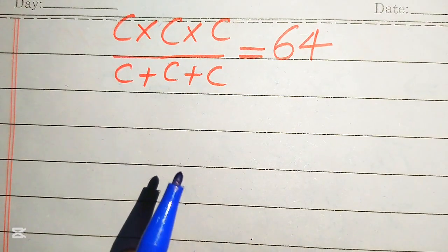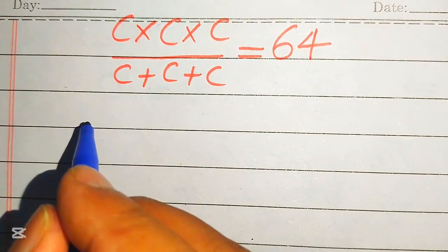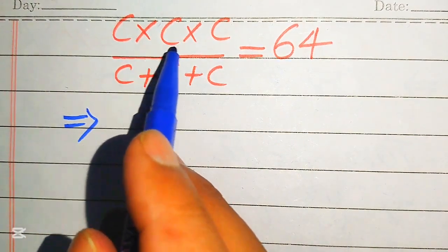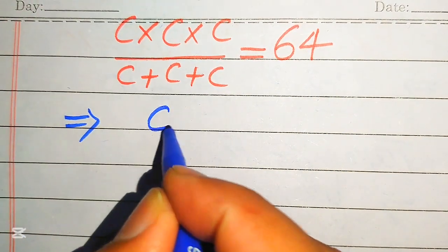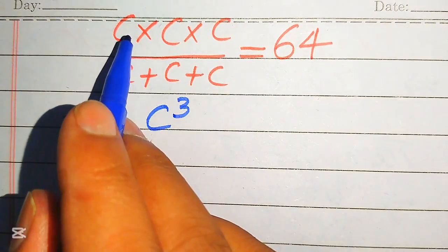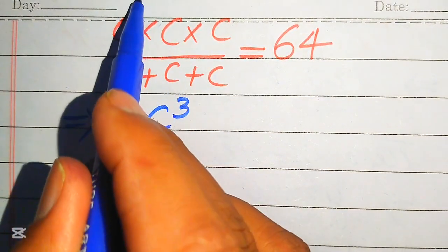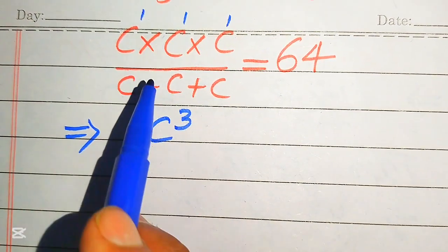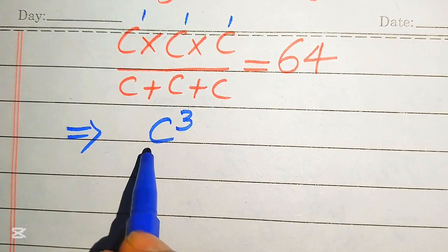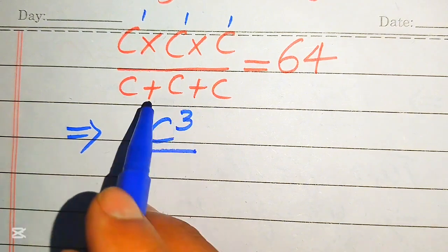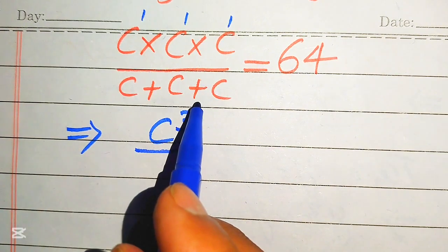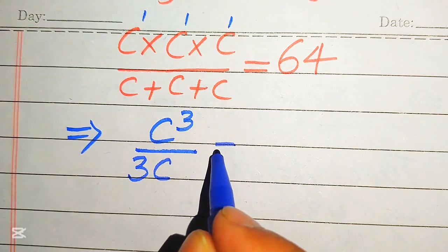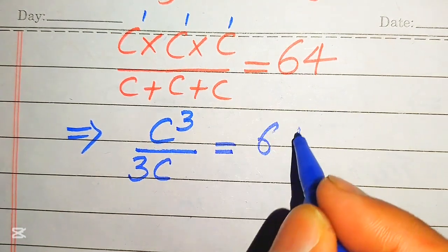The very first thing we are going to do is: in the numerator side, c is multiplied 3 times, so we write this as c cubed — because the bases are the same, we add the exponents, and each exponent is 1, so adding three 1s gives c cubed. It is divided by c added 3 times, so we write it as 3 times c. So c cubed divided by 3c equals 64.